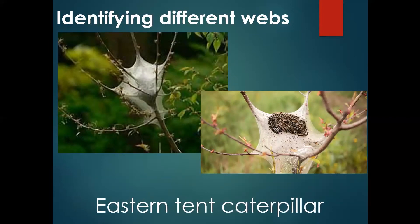Then you have eastern tent caterpillar, which I mentioned before — another native caterpillar. A lot of people think they're invasive, but they don't really cause that much harm to a tree. They might strip the leaves off a branch or two, but they're native, so they have all their native predators and checks and balances — no need to really worry about them. These webs occur in spring and early summer. They're about the size of a football, and they're in a different location than browntail — basically where the branches meet the trunk. You'll never see browntail in that location.